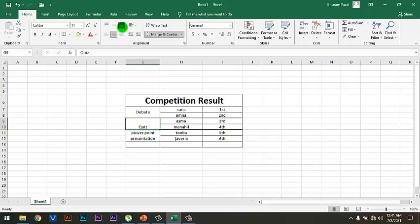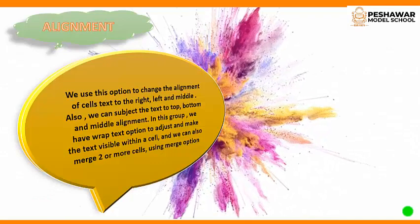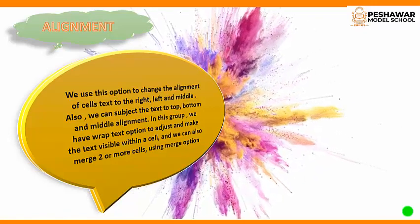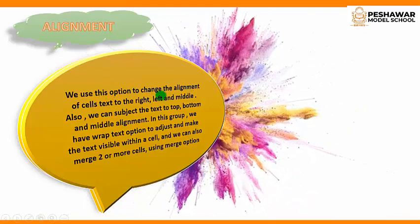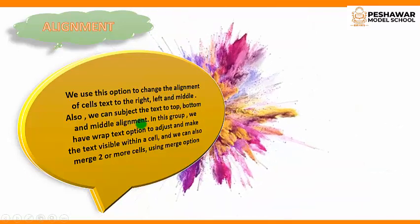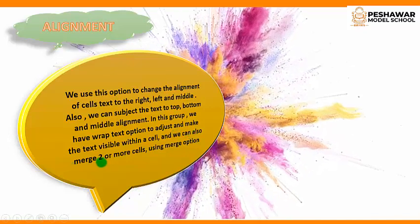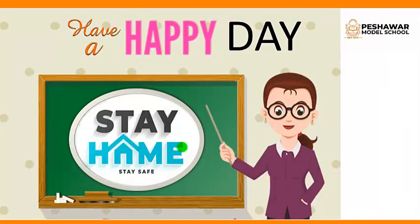As you can see, the word 'Quiz' has been placed at the bottom of the cell. Dear students, today we learned about text alignment. Alignment refers to the position where data is placed within the boundary of a cell. We use this option to change the alignment of cell text to the right, left, and middle, and also to the top, bottom, and middle. In this group we have Wrap Text to make text visible within a cell, and we can merge two or more cells using the Merge option. Take care of yourself — stay home, stay safe.